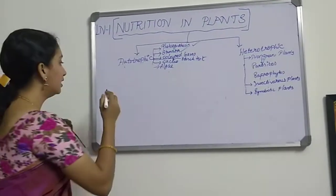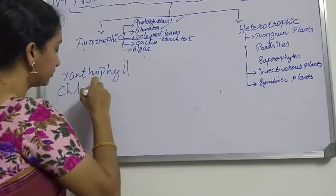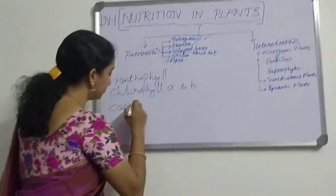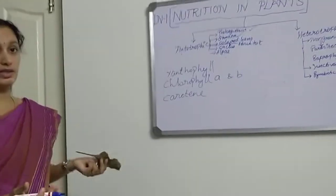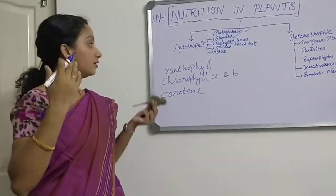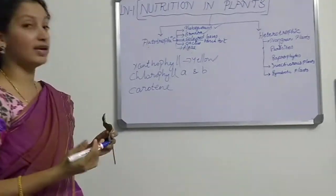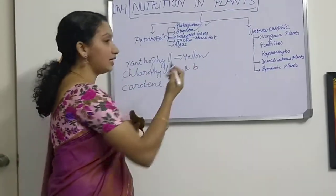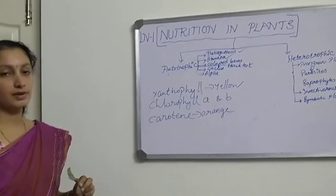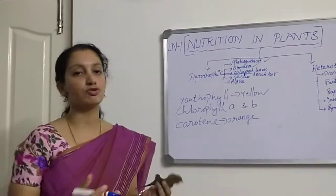So why are these colors appearing on leaves instead of green? We have different types of pigments: xanthophyll, chlorophyll A and B, carotene, and anthocyanin. All these are different colored pigments giving different colors to the leaf. Xanthophyll gives yellow color, chlorophyll A gives yellow-green mixed color, chlorophyll B gives blue-green color, carotene gives orange color, and anthocyanin gives red color. Whichever color is predominant, that color will appear on the leaf.